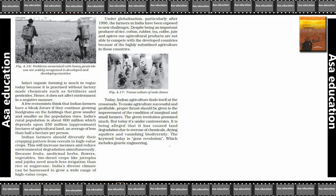Indian farmers should diversify their cropping pattern from cereals to high-value crops. This will increase incomes and reduce environmental degradation simultaneously, because fruits, medicinal herbs, flowers, vegetables, and bio-diesel crops like Jatropha and Jojoba need much less irrigation than rice or sugar cane.